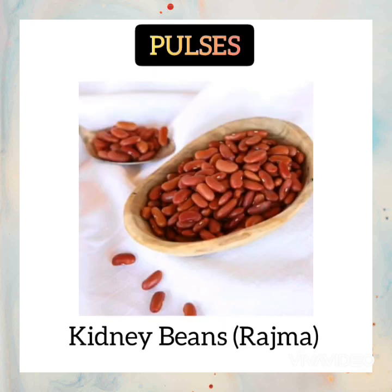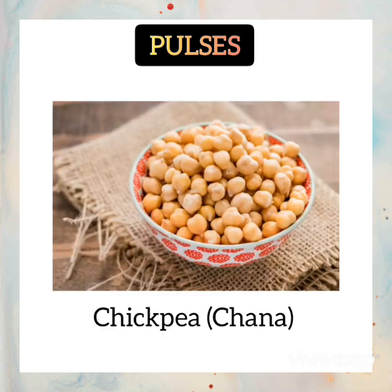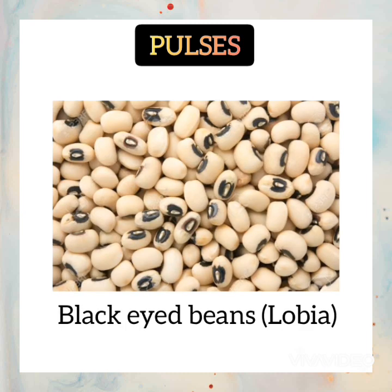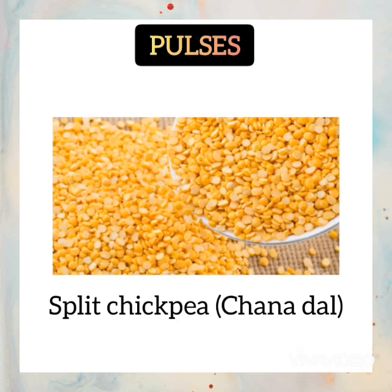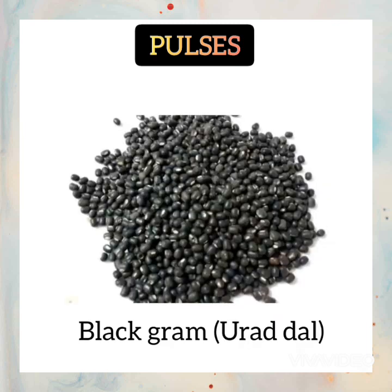Pulses: examples of pulses are kidney beans (rajma), chickpea (chana), black-eyed beans (lobia), red lentil (masoor dal), split chickpea (chana dal), and black gram (urad dal).